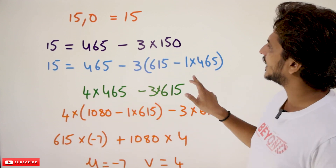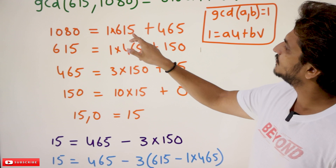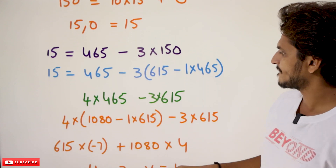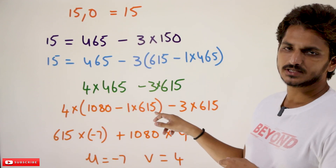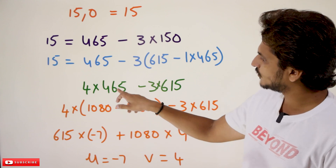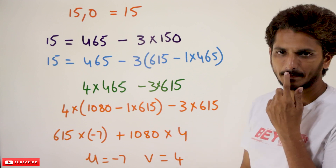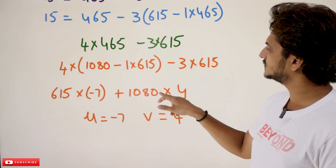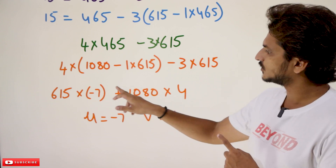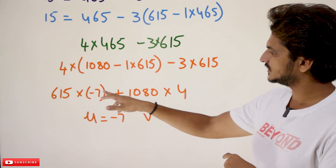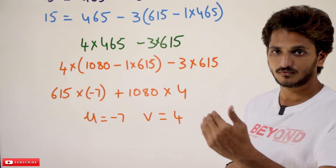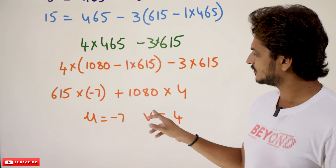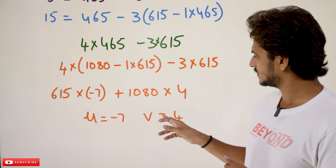Now in place of 465: from the earlier step, 465 = 1080 − 1 × 615. Substituting 465 with (1080 − 1 × 615): after solving we get 615 × (−7) + 1080 × 4. So u = −7 and v = 4, and this equals 15. This is how we solve for u and v using the reverse order back-substitution.